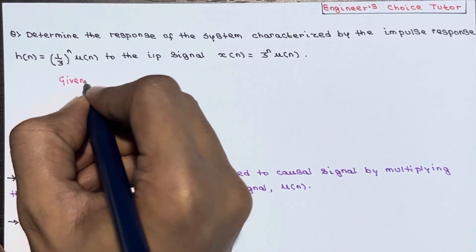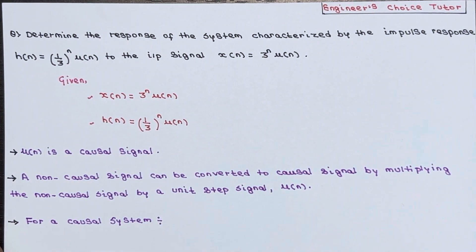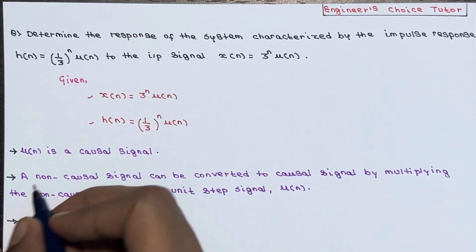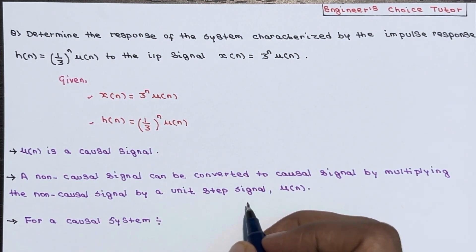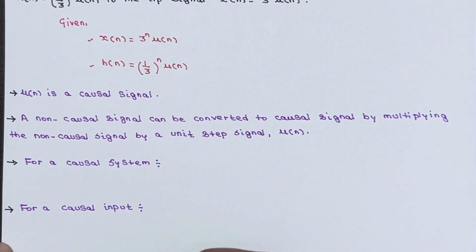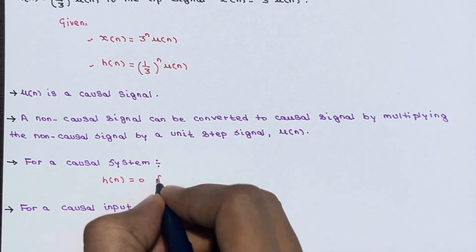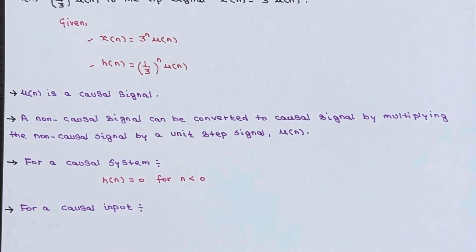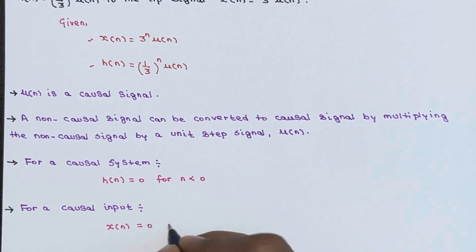So basically, the impulse response is given and the input is given. You should be aware of a few points: u(n) is a causal signal, and a non-causal signal can be converted to a causal signal by multiplying by u(n). For a causal system, the condition is h(n) = 0 for n < 0, and for a causal input, x(n) = 0 for n < 0.